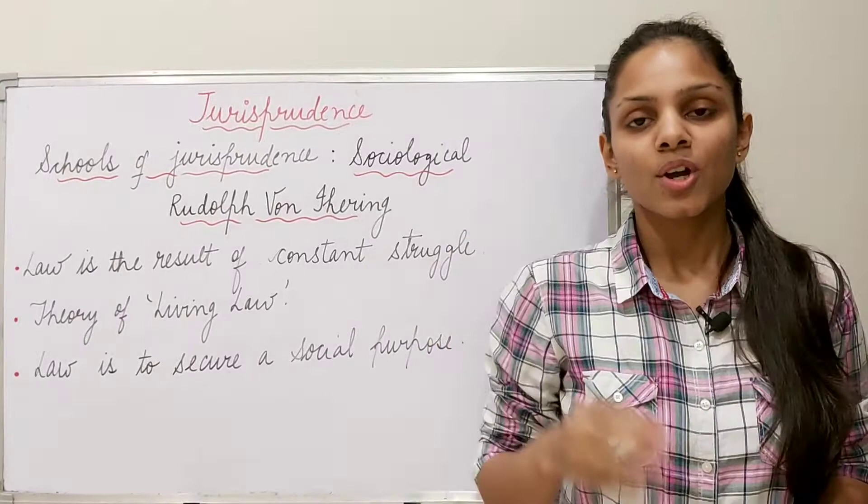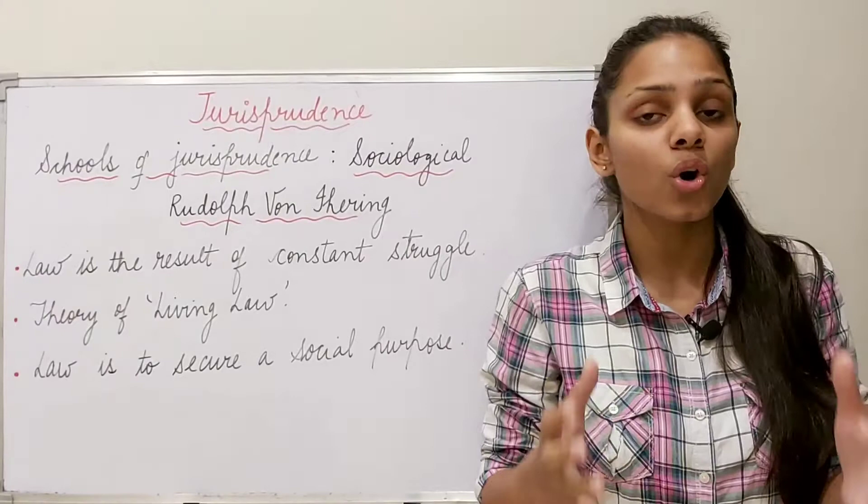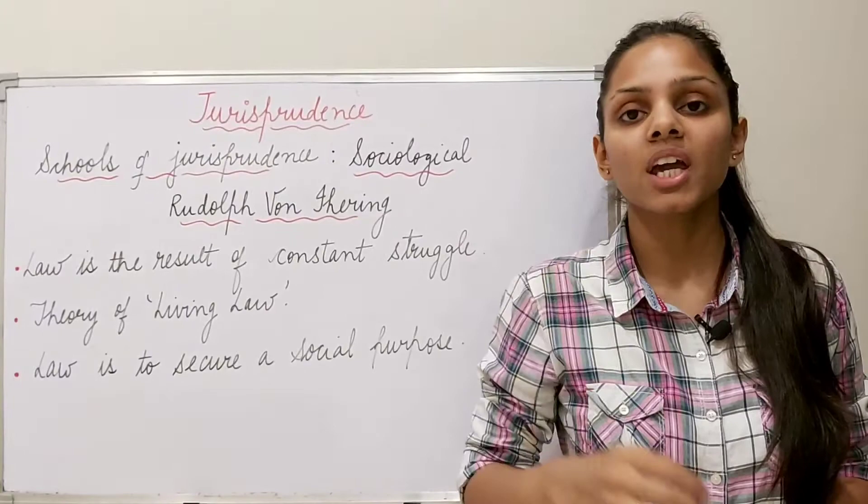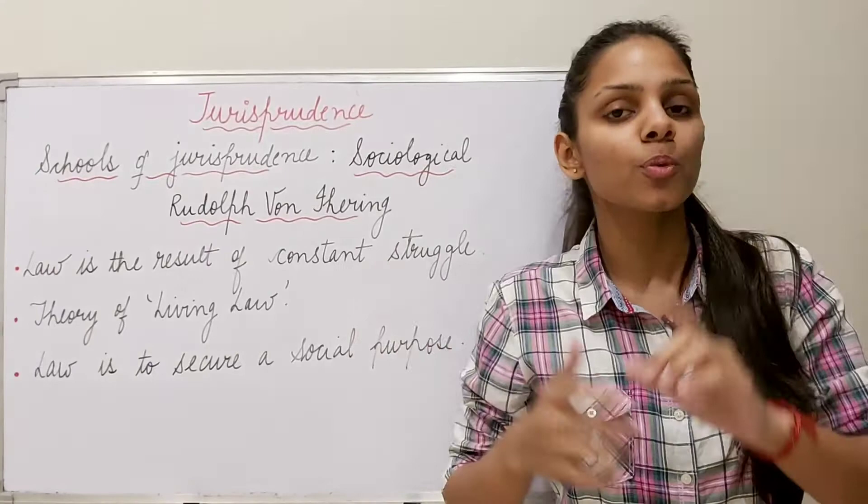He is of the opinion that the origin or source of law is to be found in social struggles or conflicts, and it is only to harmonize or reconcile between these conflicting interests of individuals and society that law has come into existence. He said law's ultimate aim and purpose is to strike a balance between these two interests and to promote general interest, because it leads to the greatest happiness of the greatest number.